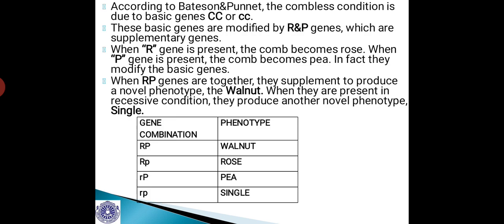According to Bateson and Punnett, the comb condition is due to basic genes — capital C and small c. However, these basic genes are modified by other genes: the R and P genes, which are supplementary genes. They are called supplementary genes because they are not the basic genes — the basic genes are either capital C or small c — but R and P supplement their effect on the expression of the comb pattern in fowls. When the R gene is present, the comb becomes Rose.